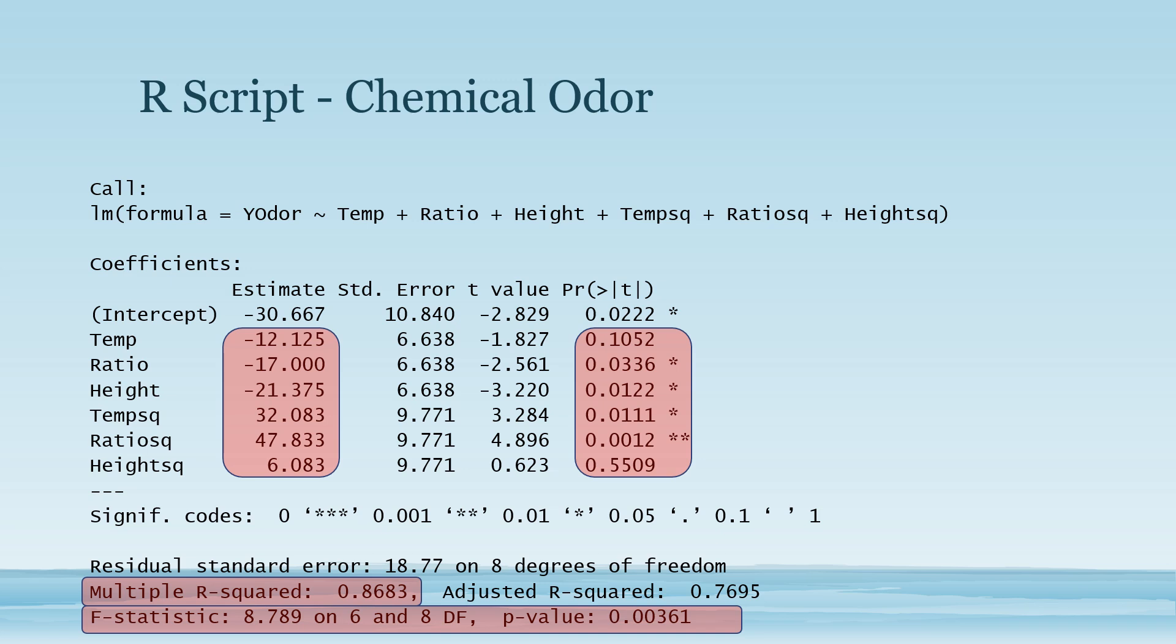The overall model explains 86.83 percent of the variance in the chemical odor. F-statistic is 8.789 and p-value is 0.004.